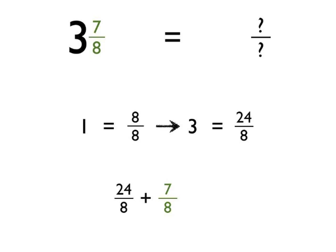So we've done the whole number part of our mixed number, but then we also need to add on the seven eighths — the improper fraction bit — to get our total number of eighths altogether. So twenty-four eighths, add the seven eighths, gives us thirty-one eighths altogether. So the answer to this as an improper fraction is thirty-one eighths.